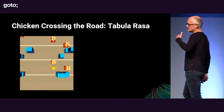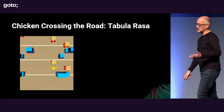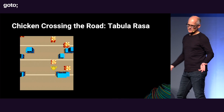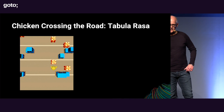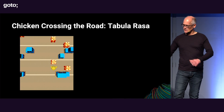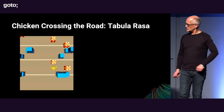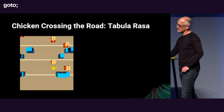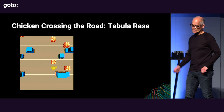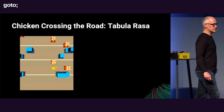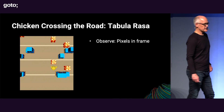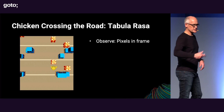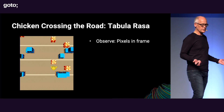Gaming is really awesome to exemplify some of this stuff that is maybe not so exciting when you look at an Amazon web page and try to understand what's going on. So what we did at Unity was basically to say: can the chicken learn to cross the road?